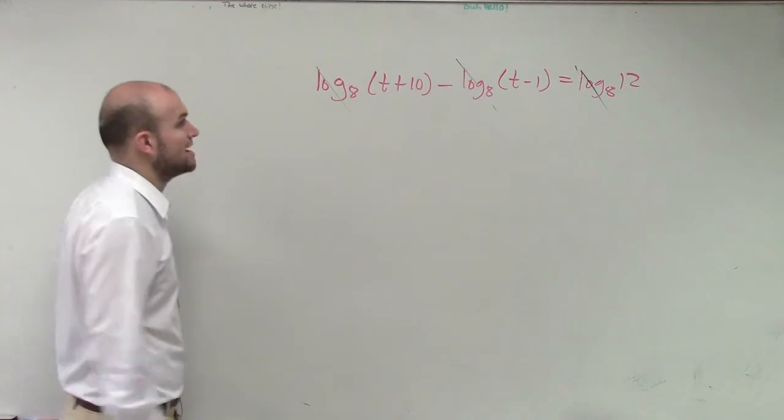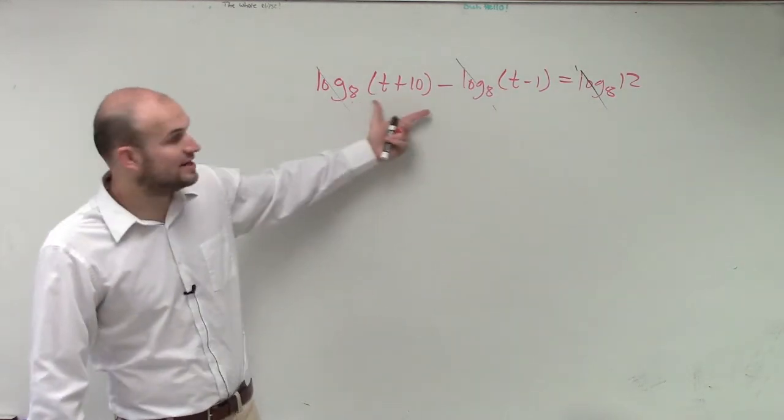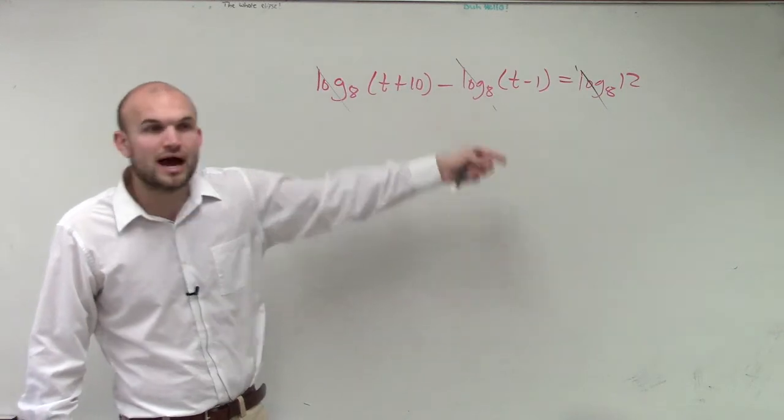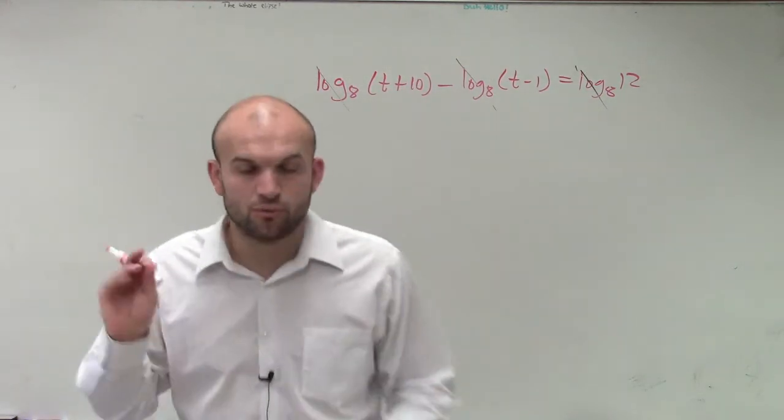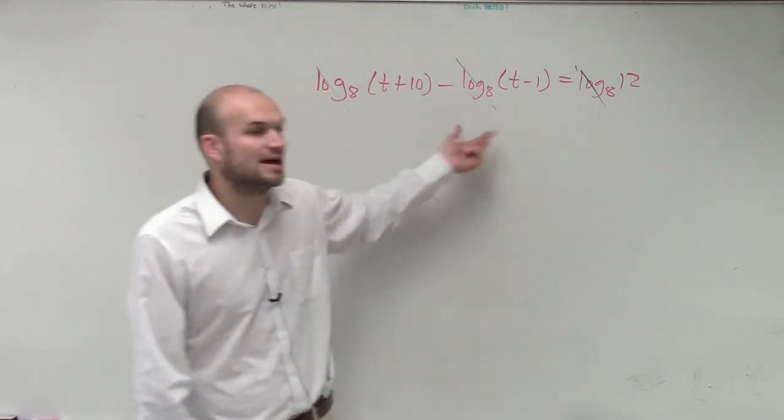On this left side, ladies and gentlemen, I do not have one logarithm. Yes, they're all to the same base, which is good, but here I have two logarithms. So to get those two logarithms to one logarithm, I need to apply the properties of logarithms. Since I have a subtraction sign, the properties of logarithms allow me to use the quotient property.